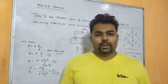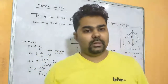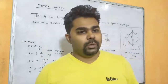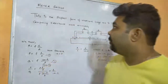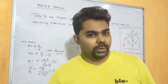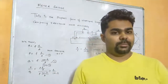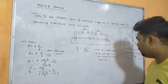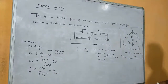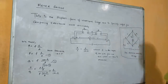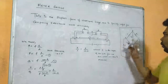Hello students, welcome to my next online class. This is a continuation video of current electricity and today's topic is the meter bridge, which is a practical application of the Wheatstone bridge. In the previous class, we learned about Wheatstone bridge: four resistances are connected in a bridge form, and when the potential at point B and point D becomes the same, no current passes through the galvanometer.